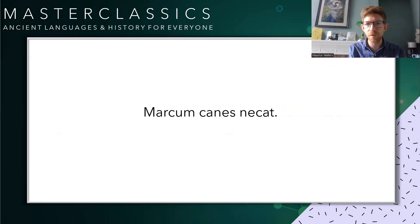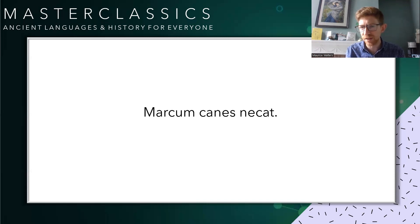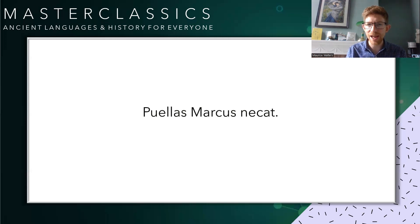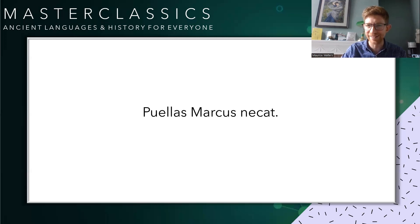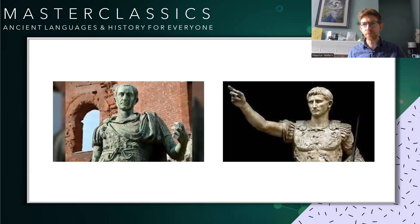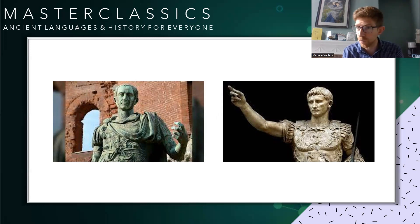Let's look at some examples with a plural. Marcus canes necat — 'Marcus kills the dogs'. Note that if it were the dogs killing Marcus, we'd need to change the verb to necant. Puellás marcus necat — 'Marcus kills the girls'; the girls have their 'as' ending telling us they're in the plural accusative. That's probably enough grammar for this week. Next week we'll look at another case — the dative case. There may be a song involved.